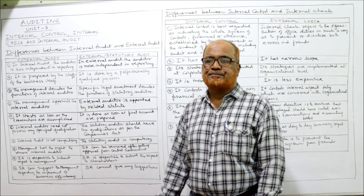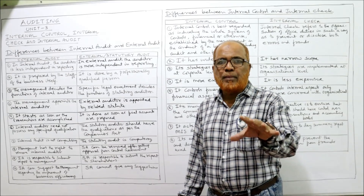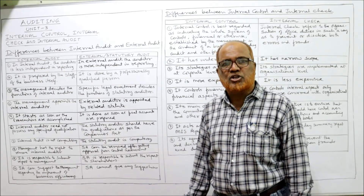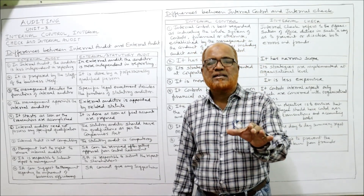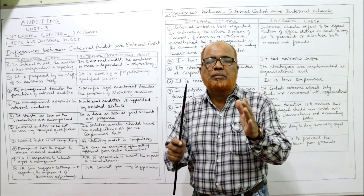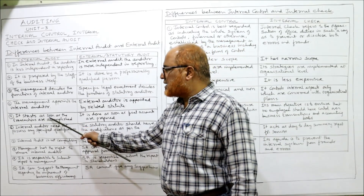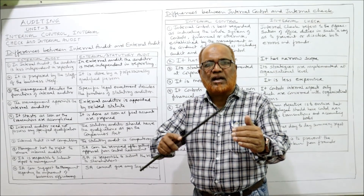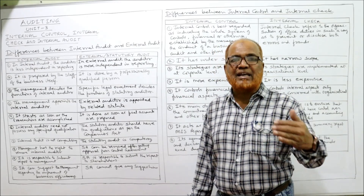Fourth difference: appointment. The internal auditor is appointed by the management — a staff member selected by management. For the external auditor, appointment is governed by the relevant statute; the Companies Act states who should appoint the external auditor and how. Fifth difference: timing. Internal audit begins as soon as transactions are completed, whereas external audit starts only after the completion of final accounts — when financial statements are prepared.